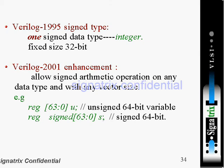Only one signed data type, that is integer in Verilog 1995. That is having the fixed size of thirty-two bit width. In Verilog 2001, enhancement is what? It allows signed arithmetic operation on any data type and with any vector size. For example, suppose I am declaring u as a sixty-four bit width unsigned variable. Now register signed, I am declaring another variable, name of s, but it is a signed one. So here in 2001, what is the enhancement? It allows signed arithmetic operation on any data type with any vector size.